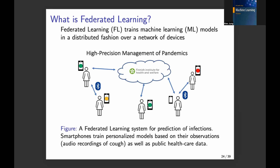You use a bit of information from other users or other potential patients to get a better model for yourself. You might also include very large databases that are freely available from public institutions. Federated learning can often involve very different types of devices — heterogeneous networks — and we will see how to model these using mathematical optimization models.